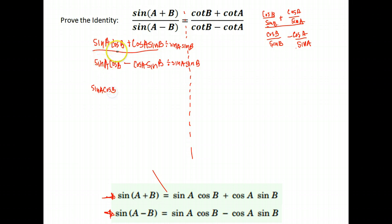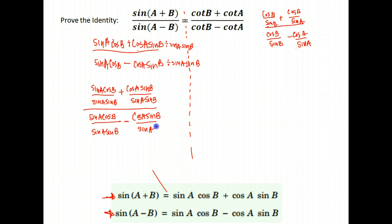What happens when I do that? I'm going to divide everything by sine A sine B. That gives me sine A cosine B over sine A sine B plus cosine A sine B over sine A sine B all over sine A cosine B over sine A sine B minus cosine A sine B over sine A sine B.